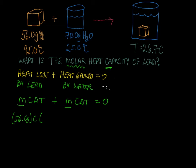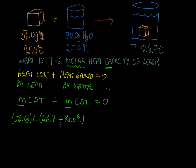So let's go ahead and plug that in. The final temperature of the lead is 26.7 degrees Celsius in that warm water, and the initial temperature is 95.0 degrees Celsius. This gives a negative number, but it's got to be that way for one value to be negative and one to be positive for the sum to be zero.